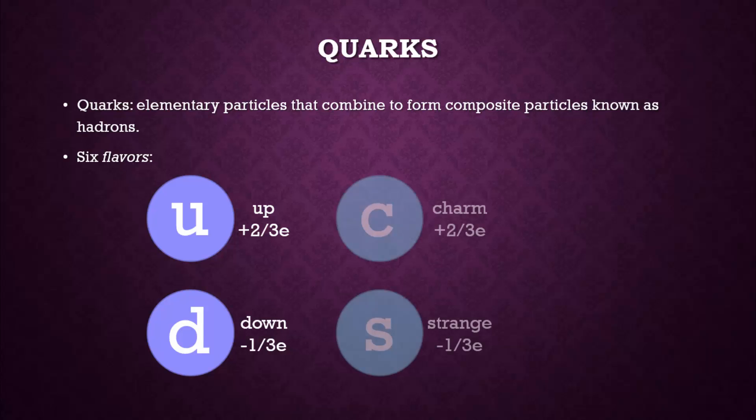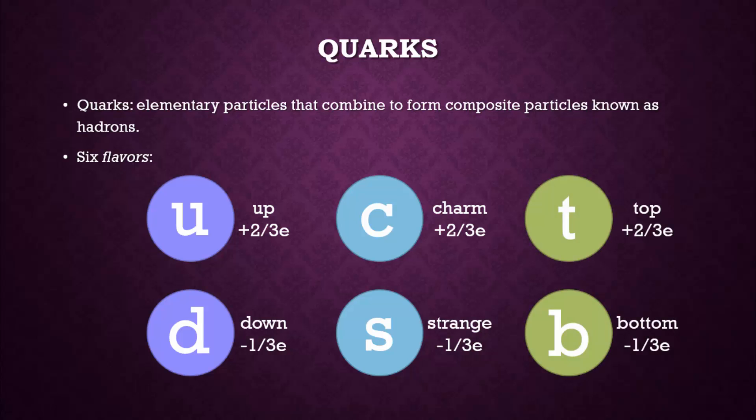The next two quarks to be discovered are known as the charm and strange quarks. The final quarks to be discovered are known as the top and bottom quarks.